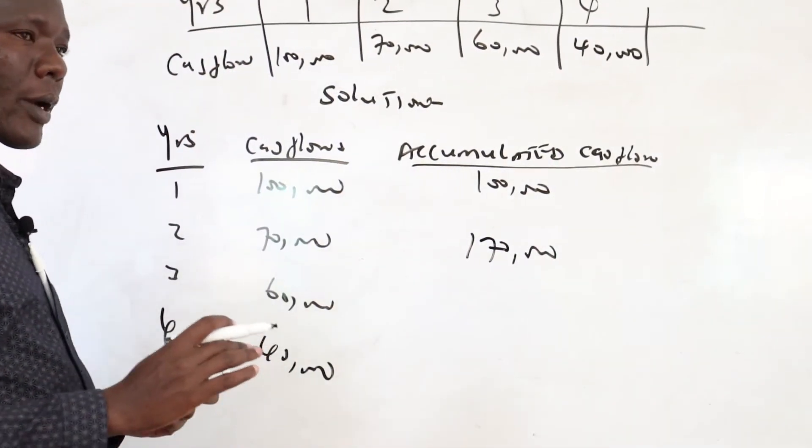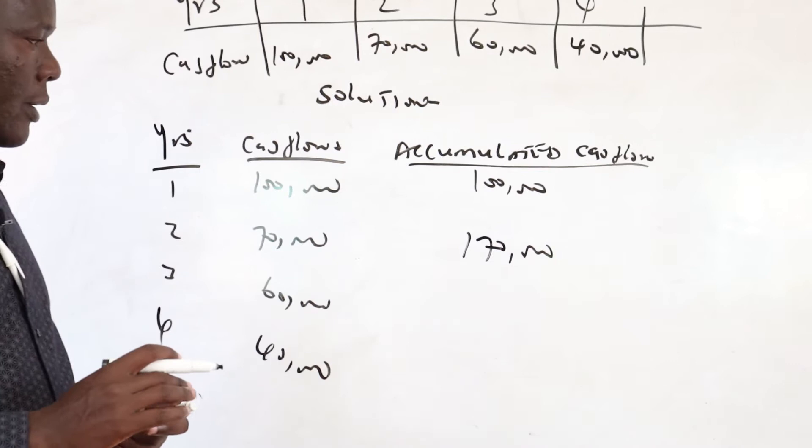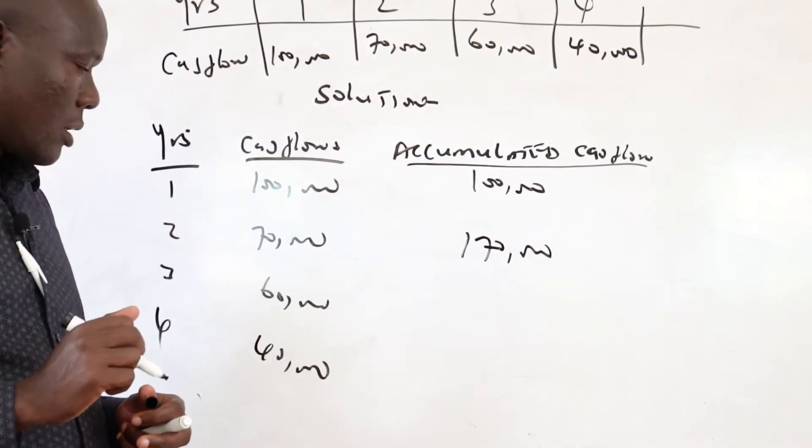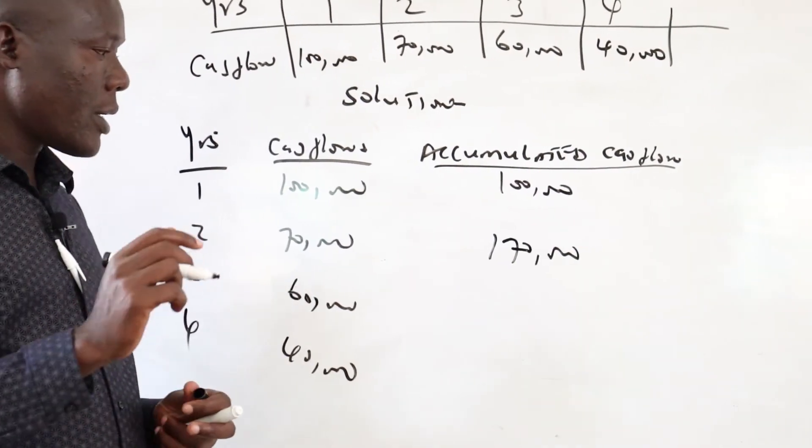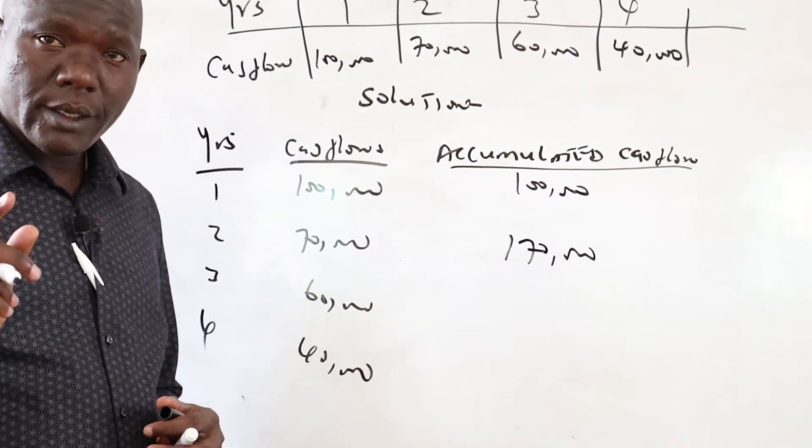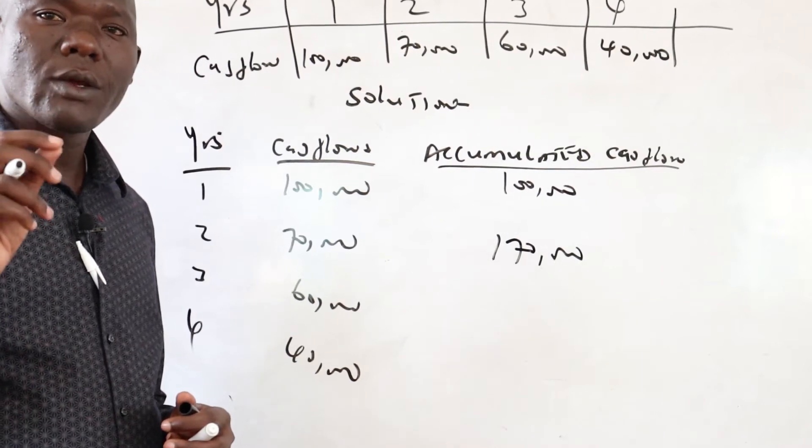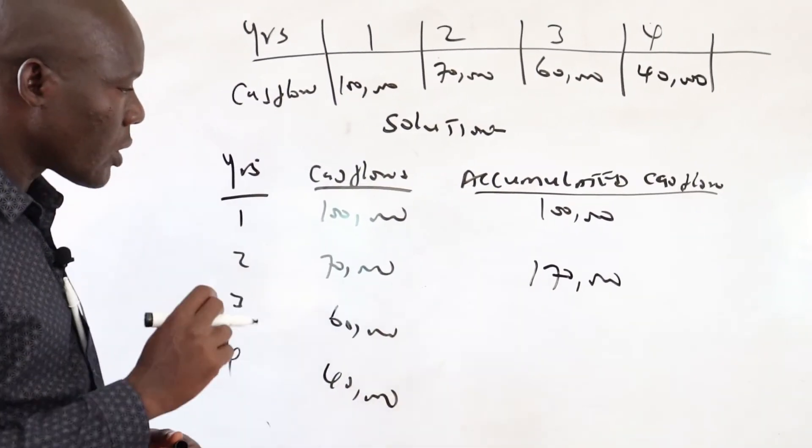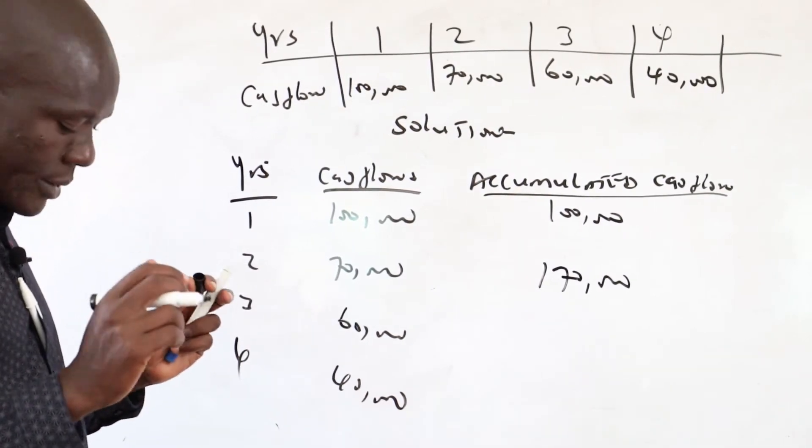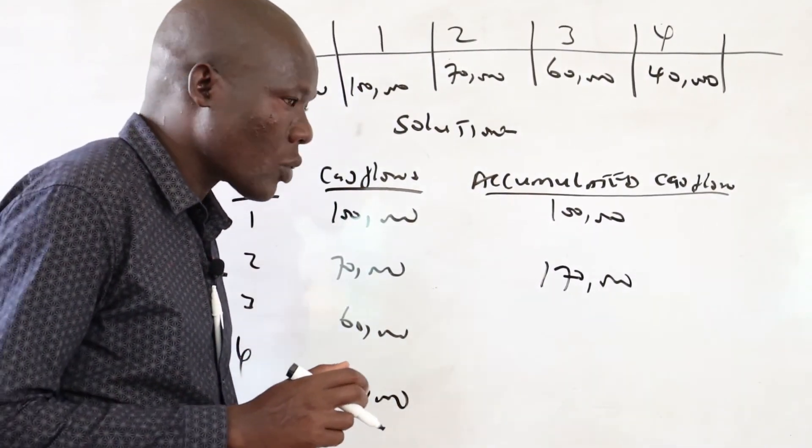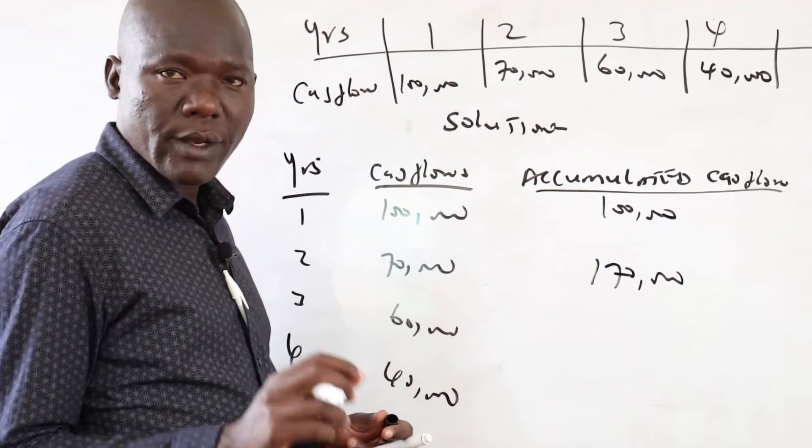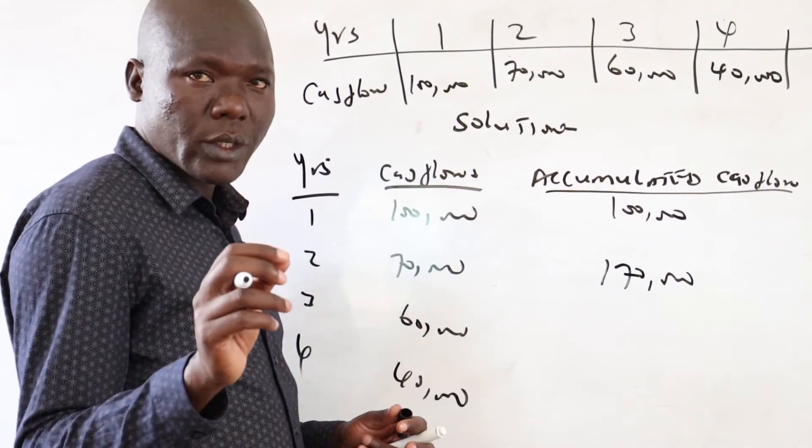But now when we are going to period three, that's where the challenge is coming from. Because if we take 170 and we add it to 60,000, that will give you 230. But the amount we invested was 200,000. So this is how we are supposed to deal with such questions. In such scenario, we are supposed to take the first two years, which we have recovered 170. So the remainder is 30,000.